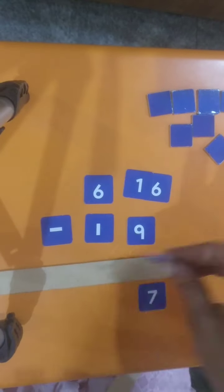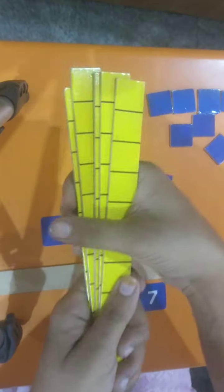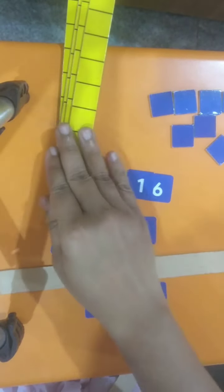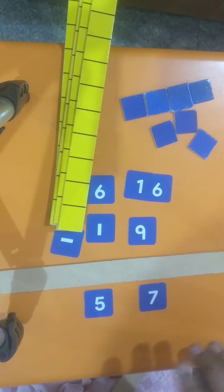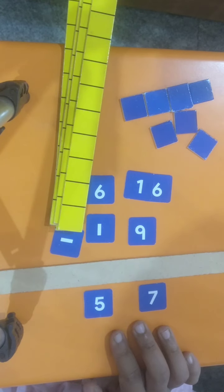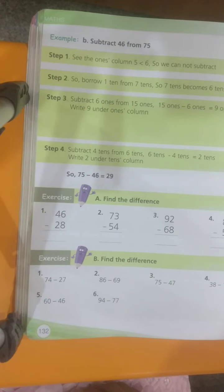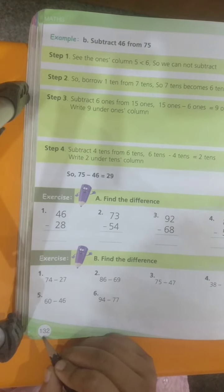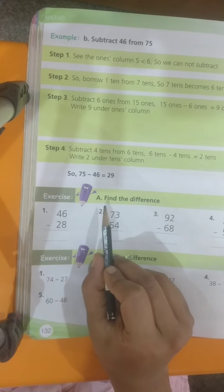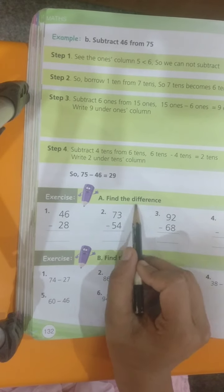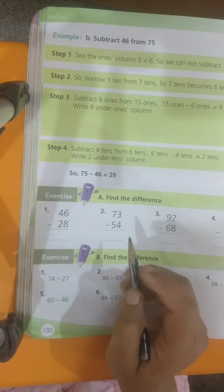Totally how many blocks are here? 5 tenths, 7 ones. That is 57. That is my answer. Same thing let us do in the textbook and practice. Please take your textbook, pencil and eraser. Textbook page number 132, Exercise 4.8. First one, find the difference. Difference means subtraction.